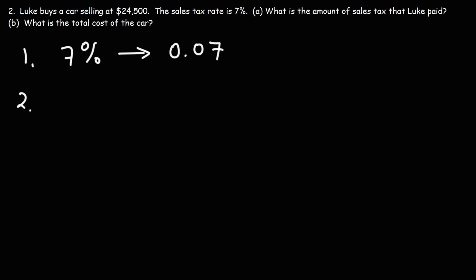Now, step two, we're going to multiply the original price or the price of the car by the tax rate in its decimal form. So that's going to be $24,500, and we're going to multiply it by 0.07. So you should get $1,715. So that's how much Luke is going to spend in sales taxes.